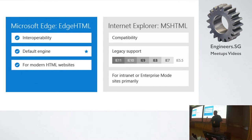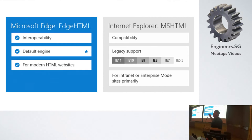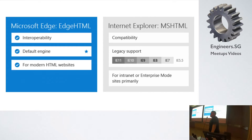Believe it or not, some enterprises are still using IE6. That's why Microsoft could not remove the document modes. But in Microsoft Edge, it's gone — no more. For legacy apps, Microsoft relies on the old IE11, which is still available in Windows 10. But the new web browser is totally modern web.